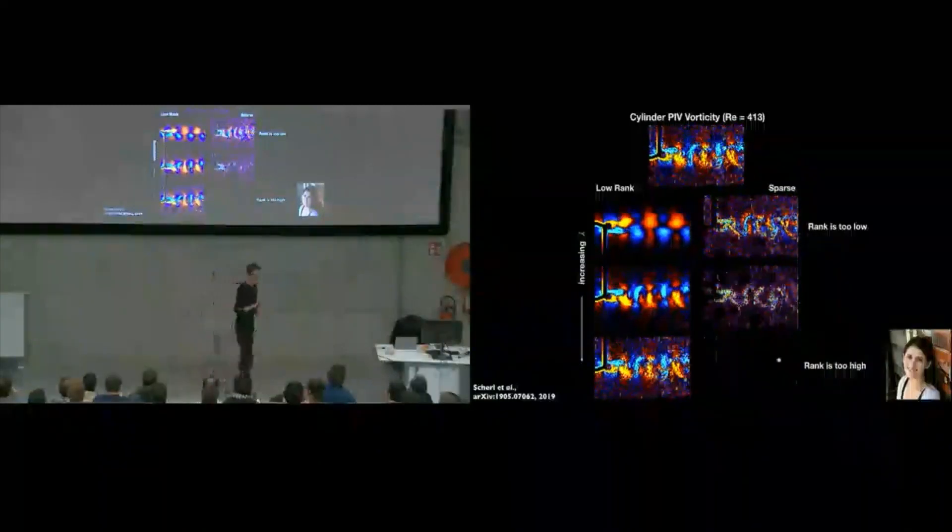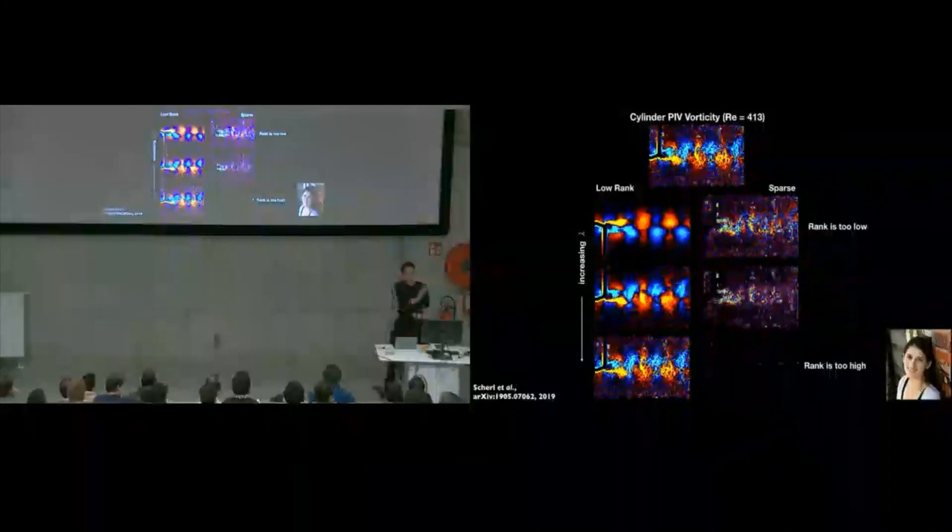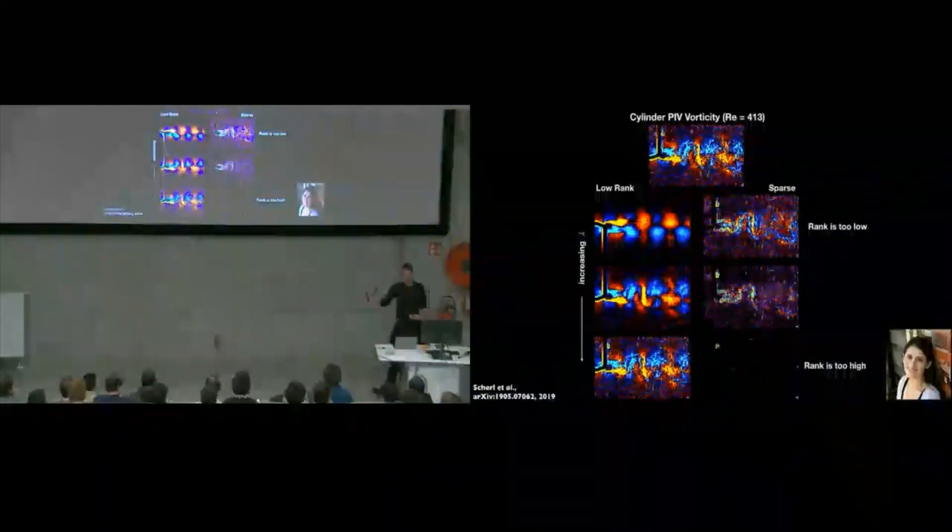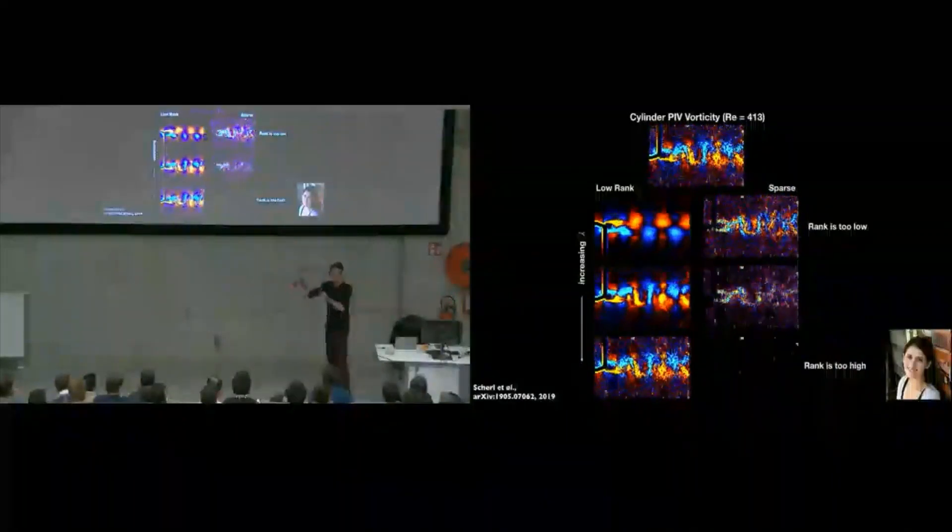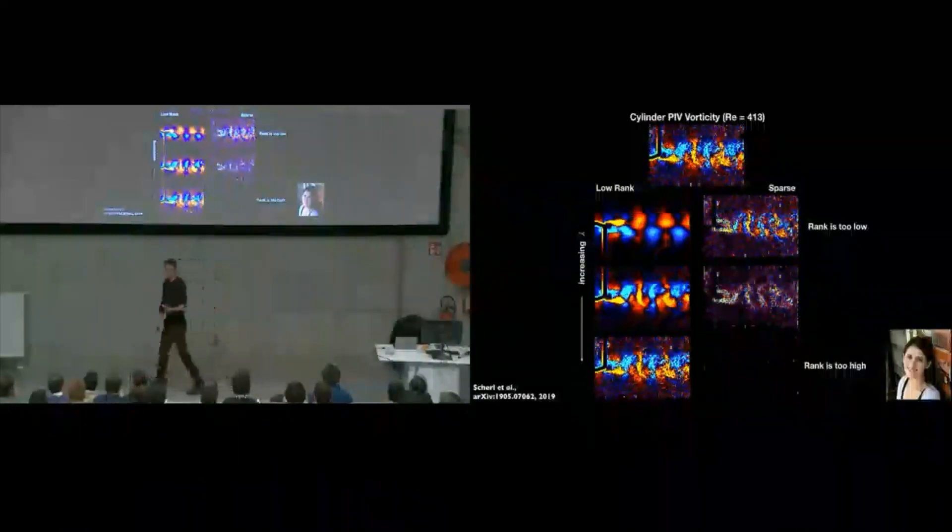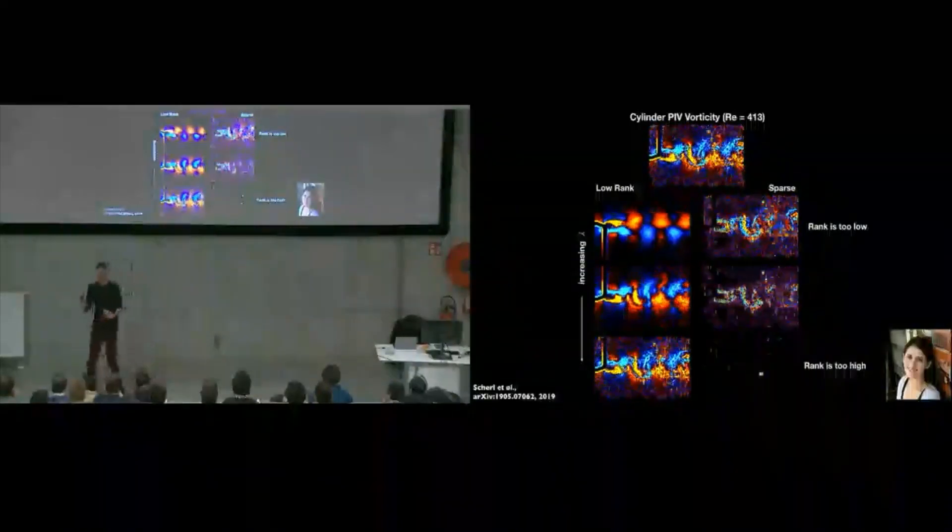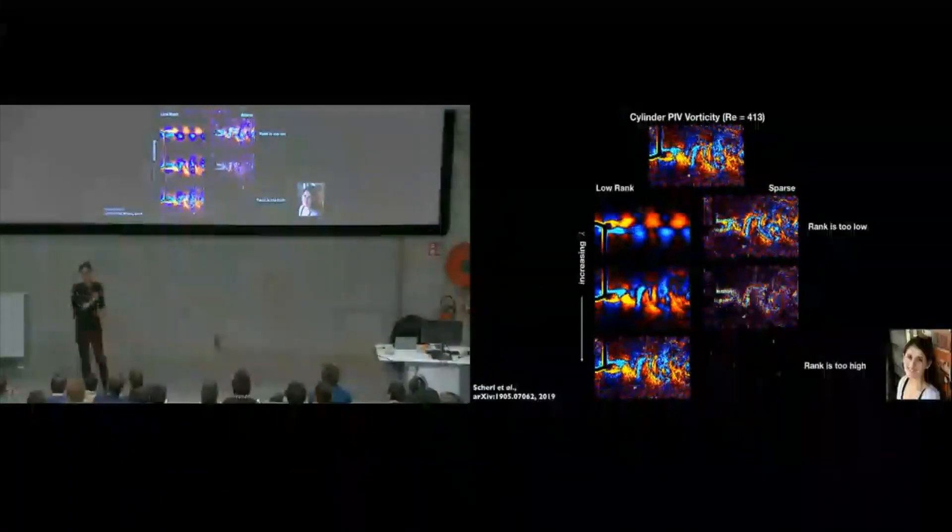So I'm going to repeat the question. Does this matter where you apply the RPCA algorithm in the PIV processing pipeline? Because there are lots of steps going from raw images to velocity vectors. That's the last section of the paper Isabel wrote, analyzing that pipeline and what happens when you put RPCA in different stages.